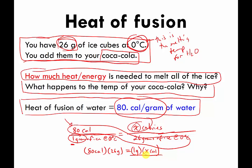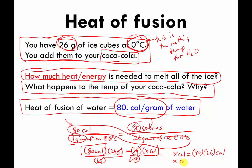We need to get x alone, so divide both sides by 1 gram. The gram units cancel out on both sides, leaving us with calories — which is what we wanted. So x calories equals 80 times 26 calories, which is 2,080 calories. If you had just one gram of ice about to melt it would only cost 80 calories, but we have 26 times as much, so it costs 26 times as much energy — roughly 2,080 calories — to melt our 26 grams of ice. That's the answer to the first question: 2,080 calories.